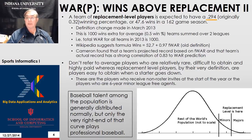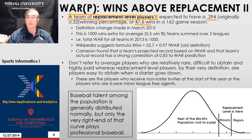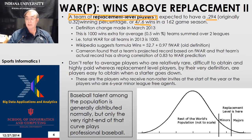If you fielded a team solely of replacement level players, which wouldn't cost you very much money, you would have a 0.294 winning percentage — only 47.6 wins — whereas you'd like 90 to 110 wins. The replacement level for minors and majors are different; minors is lower. You have all-star players, average players, and so on, all out in the tail of the quality distribution.